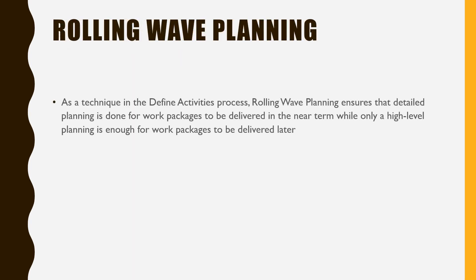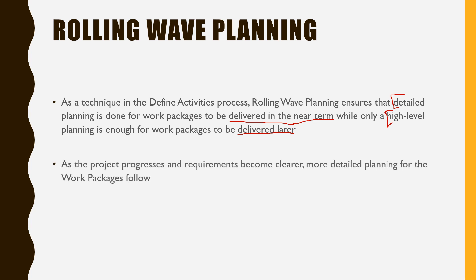Rolling wave planning is a technique in the Define Activities process. It ensures that detailed planning is done for work packages to be delivered in the near term, while only a high-level planning is enough for work packages to be delivered later. So for near-term work packages you do detailed planning; for later work packages, high-level planning is sufficient. As the project progresses and requirements become clearer, more detailed planning for those work packages can be done. To be precise, you basically plan as you go.